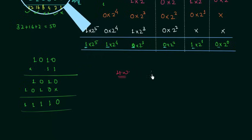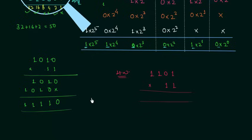The first number is 1101 and the second number is 11. You have to perform the multiplication and once you have your answer, post it in the comment section. If you have any doubt regarding any part of this presentation, you may ask in the comment section.